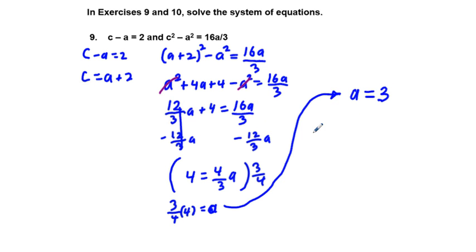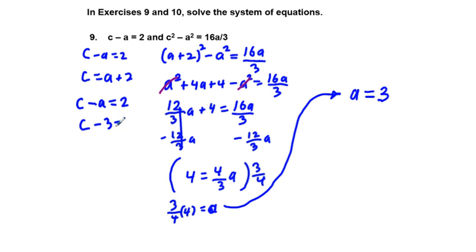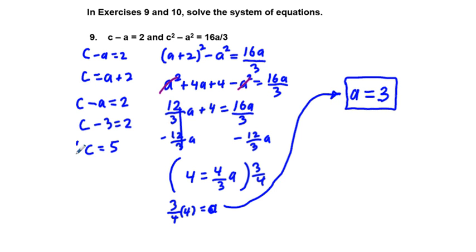So a equals 3. Going back to the original equation c minus a equals 2, with a equals 3: c minus 3 equals 2, so c equals 5. Our solution set is a equals 3 and c equals 5.